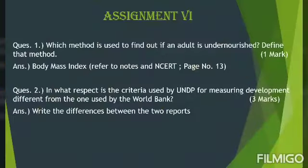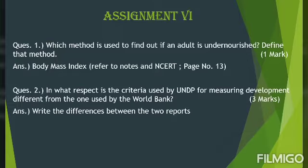Moving to assignment 6. You all got these two questions. First question: which method is used to find out if an adult is undernourished? Define that method. The method used is body mass index. For the definition you can refer to notes or page number 30 of NCERT. One important thing — you cannot miss the formula used to calculate body mass index. You have to mention that formula.